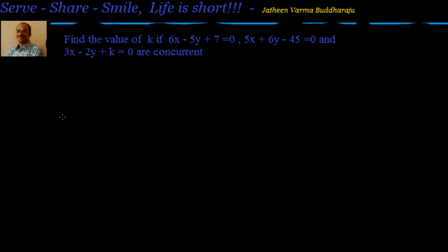So what is the first method? There are three methods. The first method: find out the point of intersection of the first and second lines, and that point should be passing through the third remaining line. Based on that, I can find out the value of k.